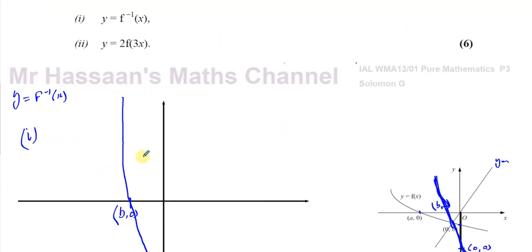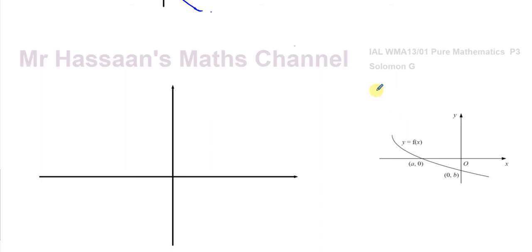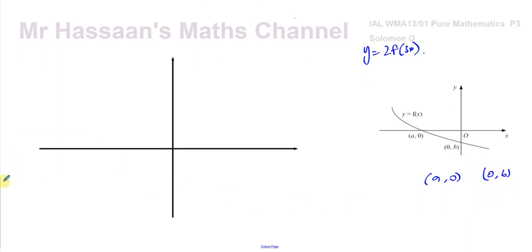Now for part two: y equals 2 times f(3x). There's a procedure to follow here — it's always better to start with what's inside the function. The original coordinates of the two points are (a, 0) and (0, b). f(3x) means a horizontal stretch by a factor of one third, so only the x-coordinates change — they're divided by 3.